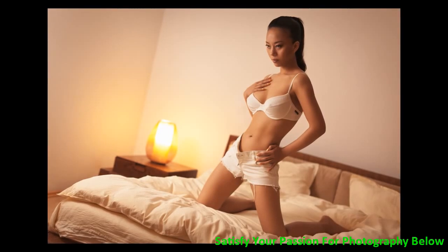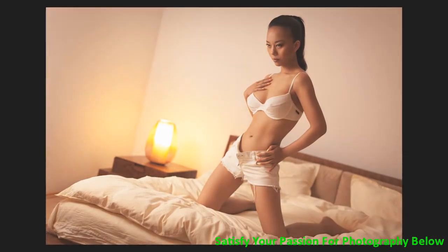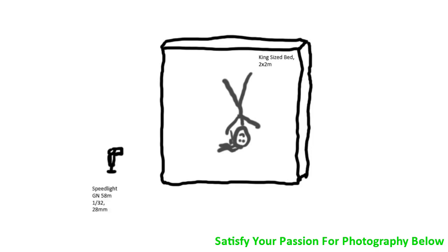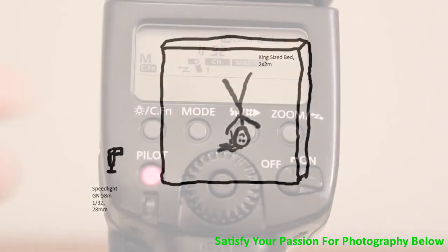So let's jump into the lighting setup. The fundamental element is a bed — over here we've got a king-sized bed, two by two meters. Shooting just a bed can be quite boring, so we add a model, posed in any way on the bed. The main point is we need some light, so we add a speedlight over here at the side.